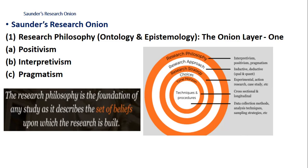For example, does reality exist as a single objective thing or is it different for each person? This reminds us of the film The Matrix and the concept of simulated reality. Epistemology, on the other hand, is how we can obtain knowledge and come to understand things — in other words, how can we figure out what reality is and what the limits of knowledge are.